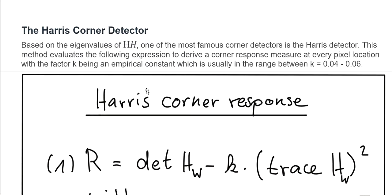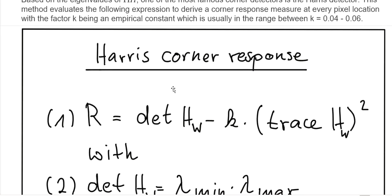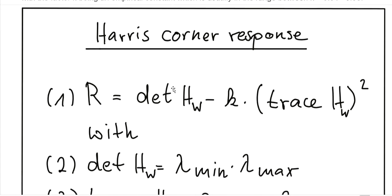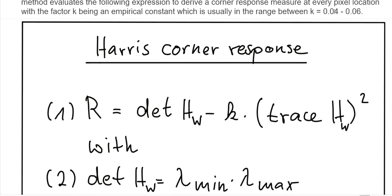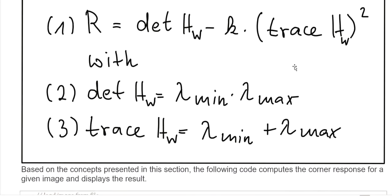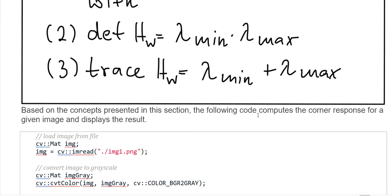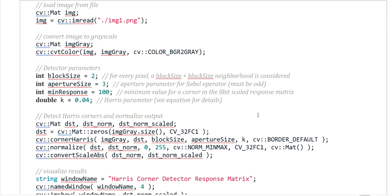The Harris corner detector is a famous corner detector in computer vision. This method evaluates a scoring expression called the corner response measure at every pixel location, with the factor K being an empirical constant which usually ranges from 0.04 to 0.06 — you can see K in the code. Here is the formula of the Harris corner response. Based on the concepts presented in this session, we can compute the corner response for all image pixels and show the results. Here is the code where we apply the Harris corner detector to the image.